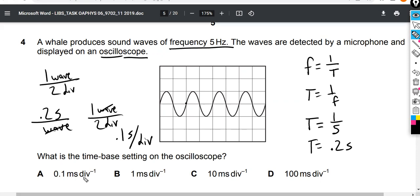0.1 seconds per division. Well, that's 0.1, but it's not milliseconds. Is 0.1 seconds one millisecond, 10 milliseconds, or 100 milliseconds? So it's one of these answers: B, C, or D.